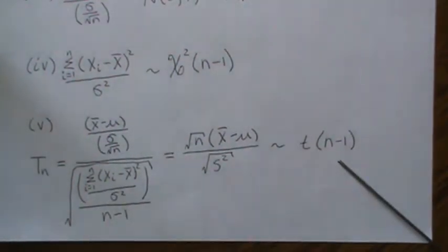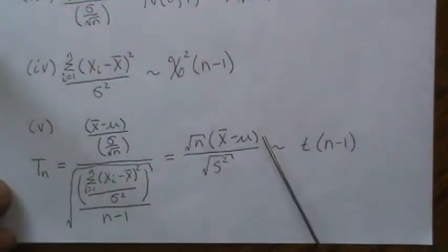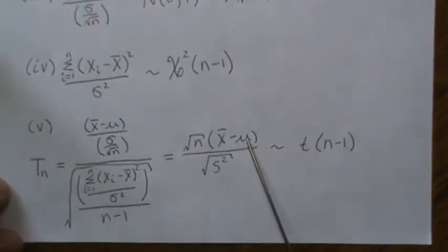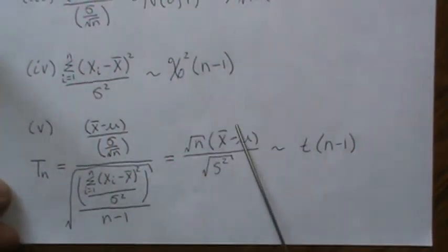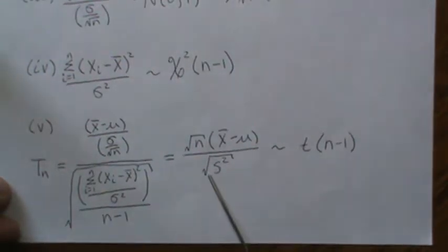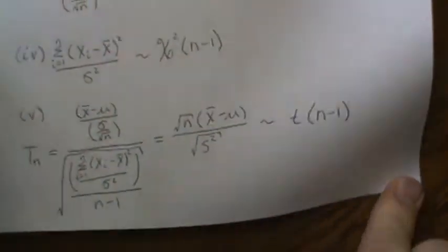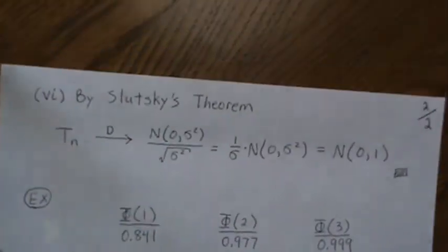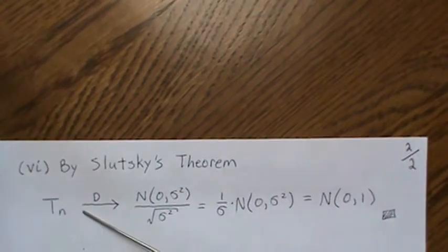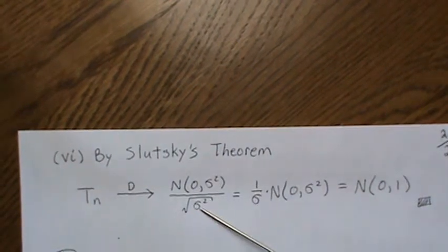Now if we look at Slutsky's theorem and treat this as limiting in distribution to N(0, sigma squared), and this converges in probability to the square root of sigma squared, then by Slutsky's theorem the t statistic converges to this ratio.